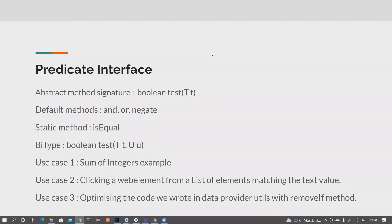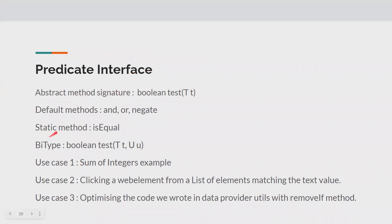Hi friends, welcome back to my channel Testing Minibytes. I'm your friend Amudan Sektivel. In this video we're going to see how we can use the Predicate interface with another use case. Previously we have seen how we can use the Predicate interface to find the sum of a list of integers. Now in this particular use case we're going to see how we can click a web element from a list of elements.